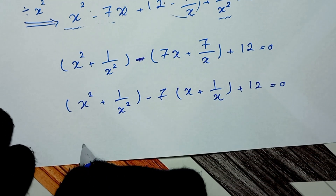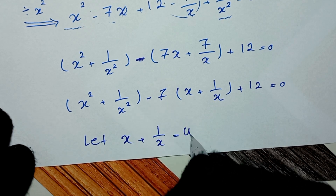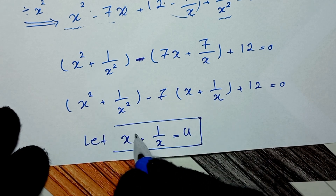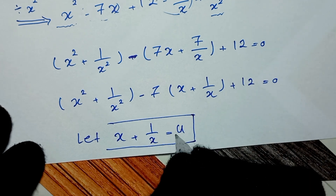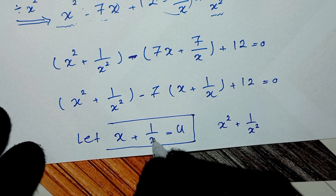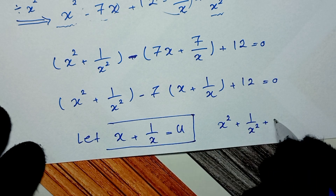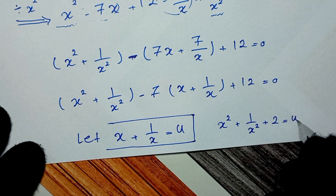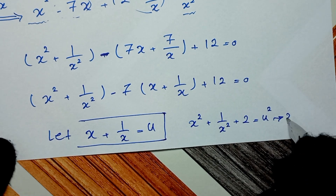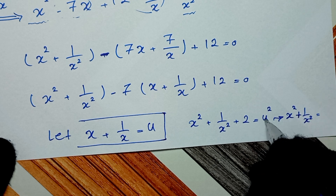Our next step: we let u equal x plus 1 over x. If we square both sides, x plus 1 over x squared equals x squared plus 2 times x times 1 over x plus 1 over x squared, which is x squared plus 1 over x squared plus 2, equal to u squared. Therefore x squared plus 1 over x squared equals u squared minus 2.